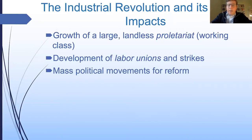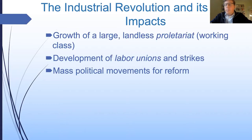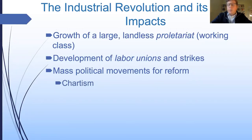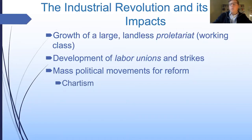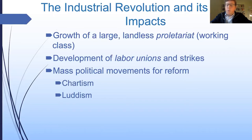From there, first in England and then spreading to other countries, a very large political movement developed to reform not just the economy to make it fairer for factory workers, but to reform all of politics and society. One of the biggest movements of the 1830s, 40s, and 50s was Chartism, which sought not just to improve life for workers but to make English democracy more fair — until then, only men who owned property could vote, reinforcing the views of the owning class in Parliament. There was also a smaller movement called Luddism: the Luddites saw the machines themselves as the problem and would go and smash them. They were usually caught and put to death.